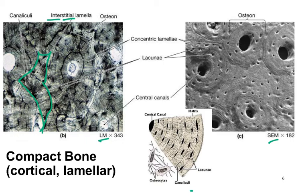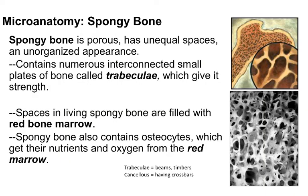The scanning electron microscope image on the right is great because you can see the lacunae so clearly. You can also make out the osteons, but it's a little more difficult because this is a very superficial view — we won't be able to see the canaliculi in this image.